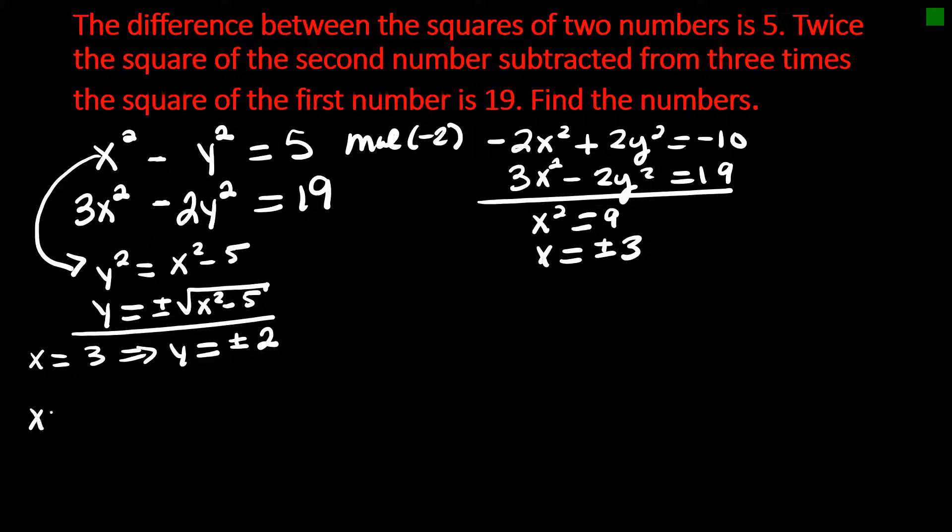If x is negative 3, then y is going to be plus or minus. Negative 3 squared is 9, 9 minus 5 is 4, the square root of 4 is 2. So we have several different combinations that can happen here.